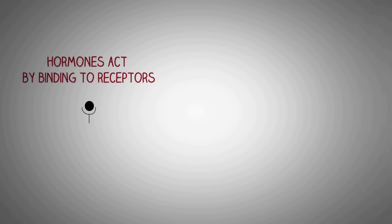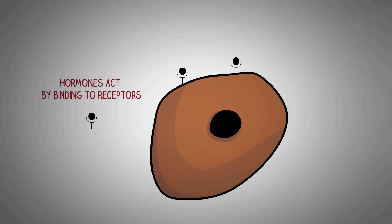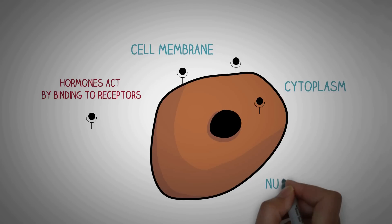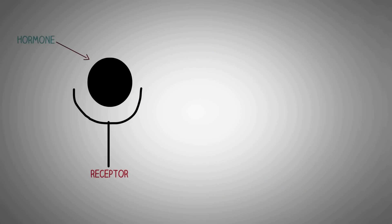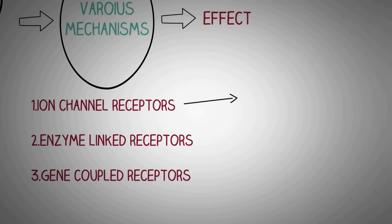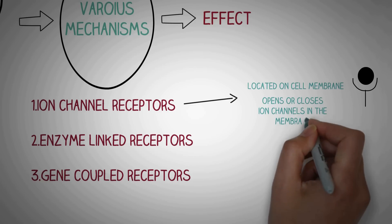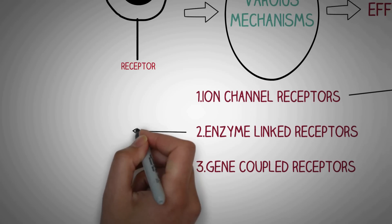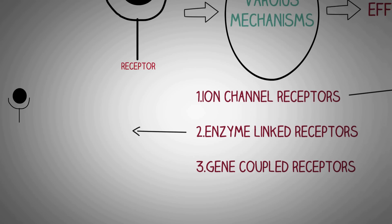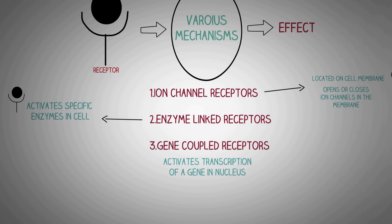These hormones exert their actions on cells by binding to specific receptors, which may be located on the cell membrane, inside the cell cytoplasm, or even inside the cell nucleus. One important mechanism involves ion channel receptors, where binding of the hormone causes opening or closing of ion channels, regulating entry or exit of ions in the cell. Another common type are enzyme-linked or G-protein-coupled receptors, where hormone binding activates many enzymes in the cell. We also have gene-linked hormone receptors, where binding of the hormone in the nucleus causes activation or deactivation of a transcription factor of a gene in DNA — for example, steroid hormones, which increase transcription of genes responsible for increased protein synthesis in the cell.